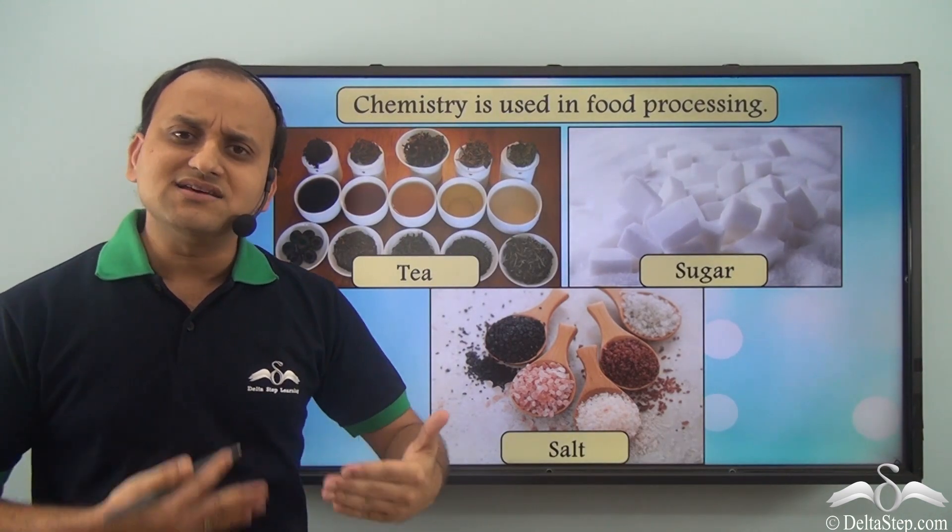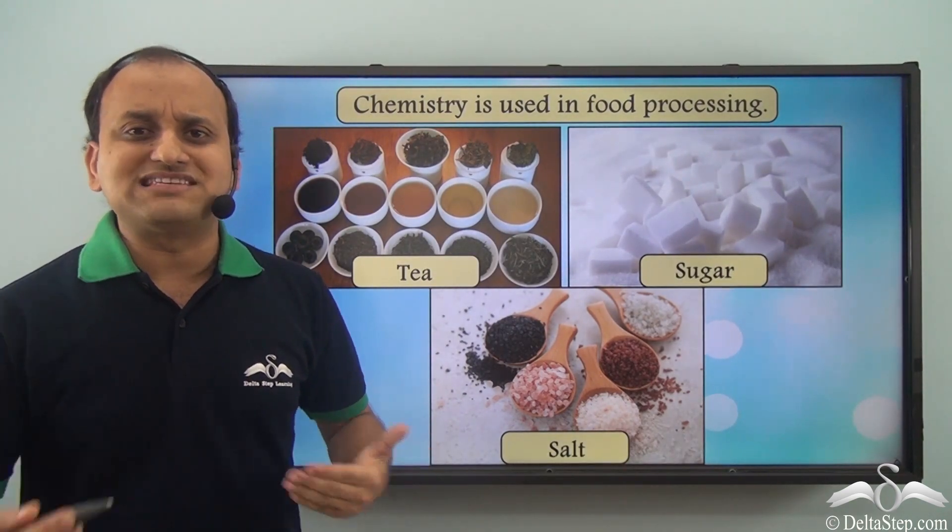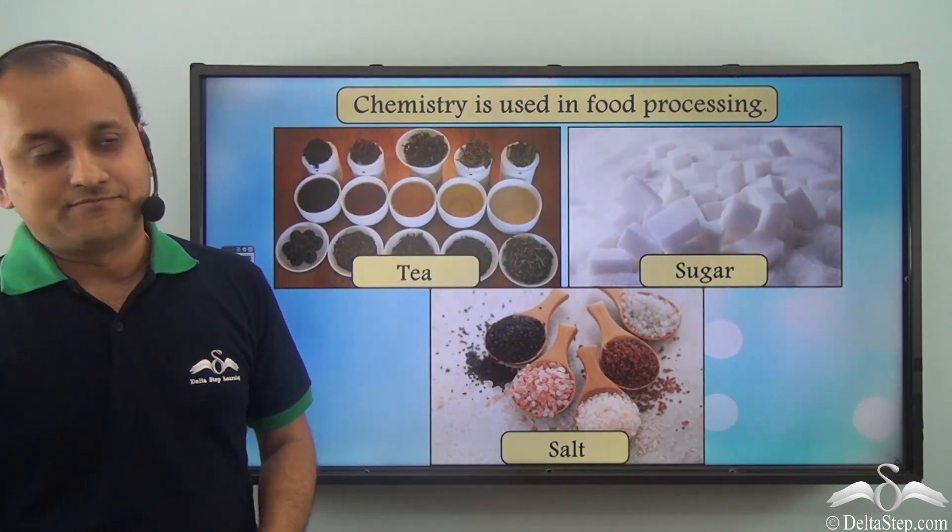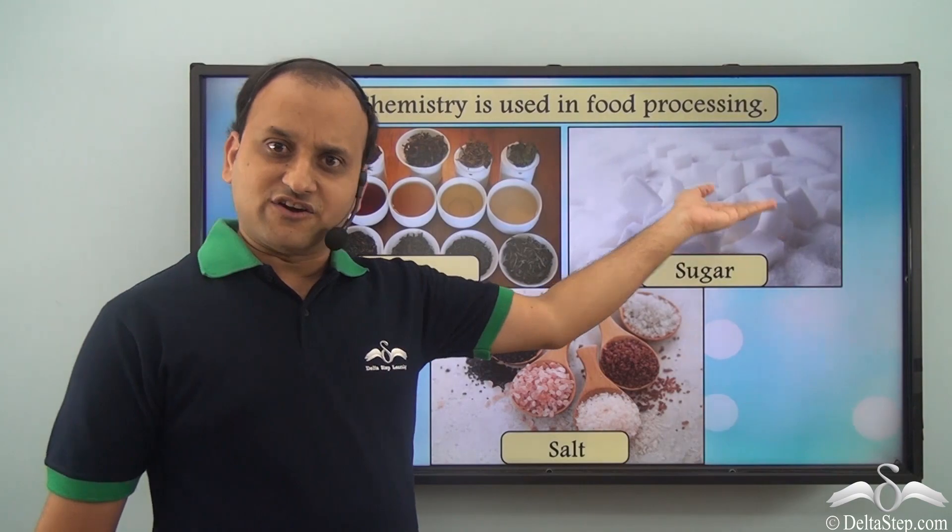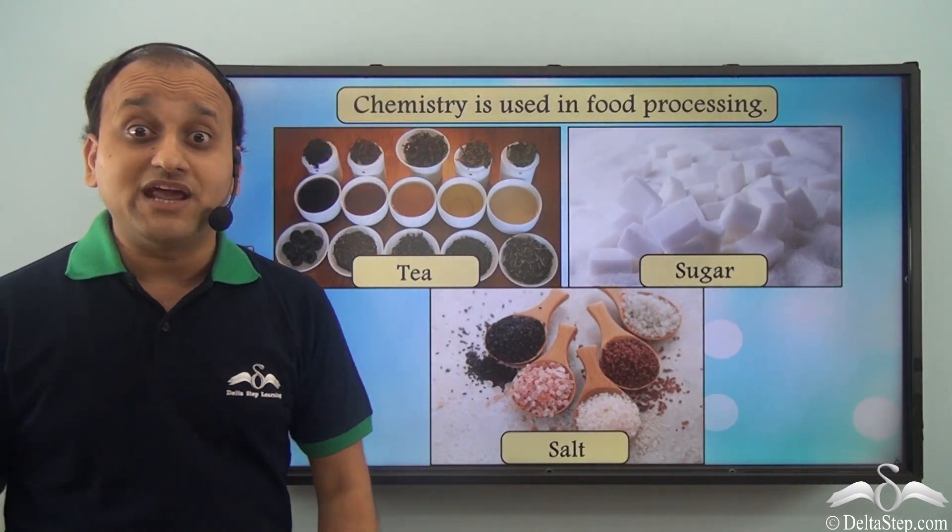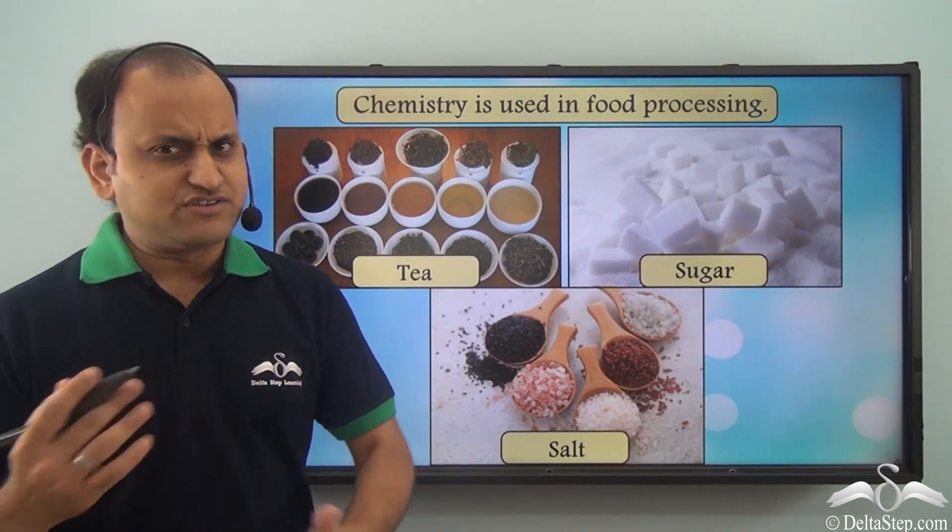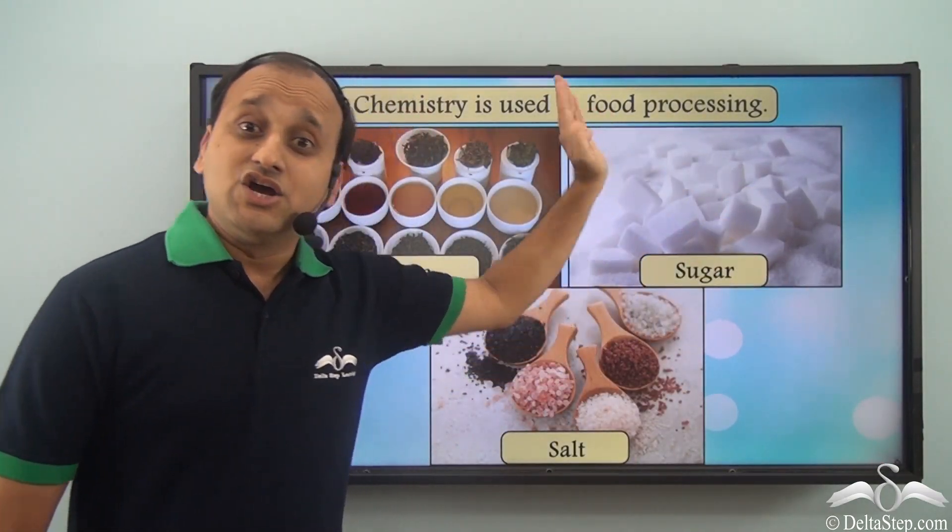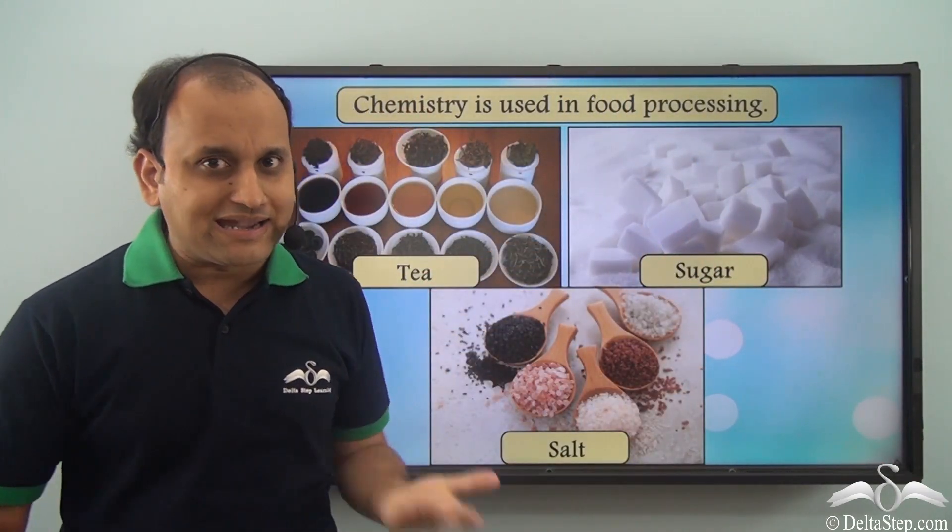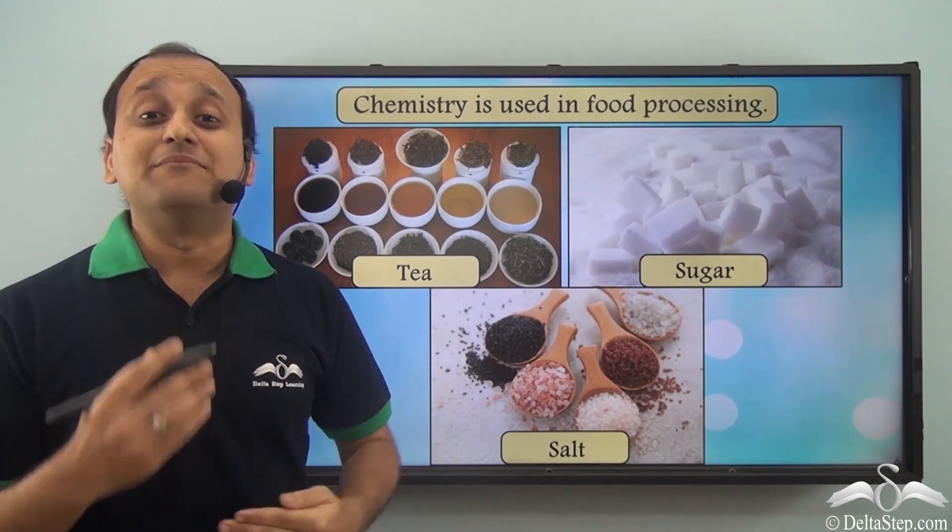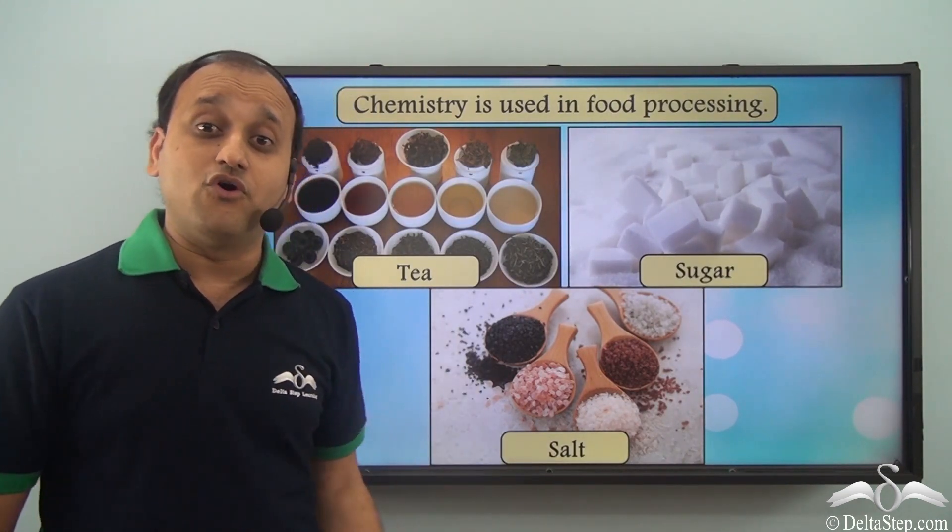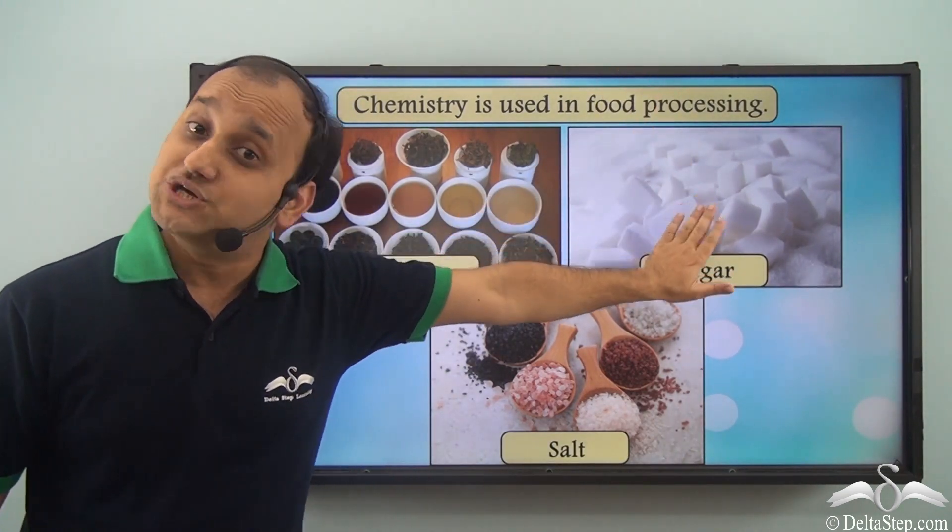Similarly, even in case of sugar, sugar is obtained from sugar cane juice. Now it's a liquid. From that liquid you get this particular sugar cube. So how do you get it? Again, we have a number of chemical processes which the sugar cane juice undergoes before you get the sugar which you eat.